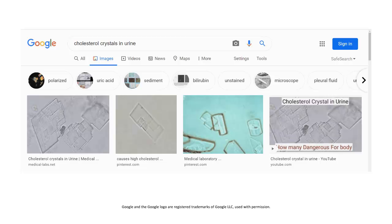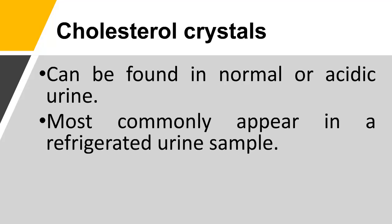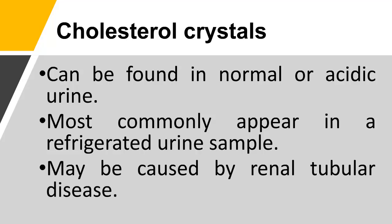Cholesterol crystals in urine can be found in normal or acidic urine and most commonly appear in a refrigerated urine sample. They may be caused by renal tubular disease.